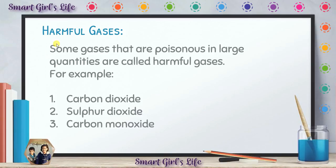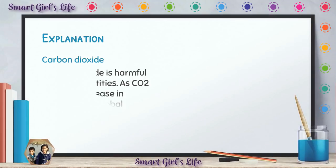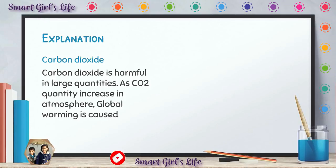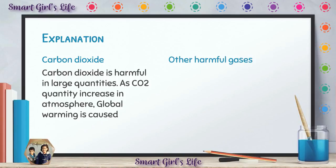Then we have sulfur dioxide, and lastly carbon monoxide. These three are some examples of harmful gases — they are not all the examples, but some. Why is carbon dioxide harmful? Carbon dioxide is harmful in large quantities. It doesn't harm us in small quantities, but in large quantities it is very harmful. As the CO2 quantity is increasing in the atmosphere, global warming is caused.